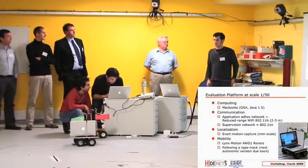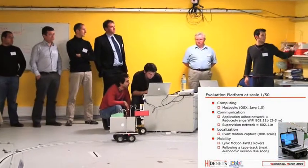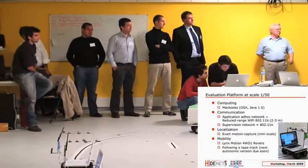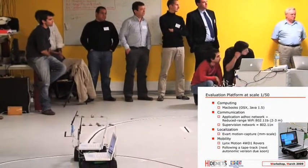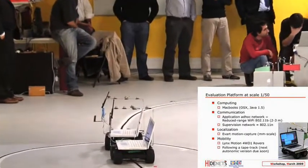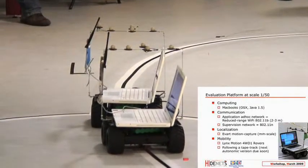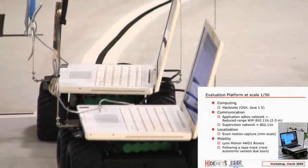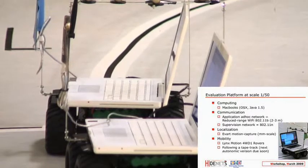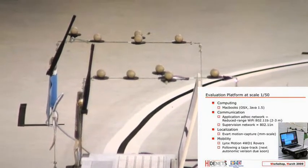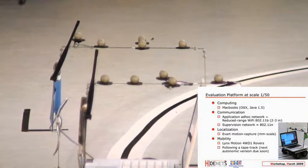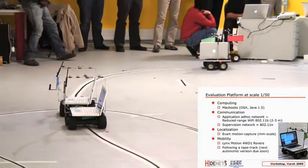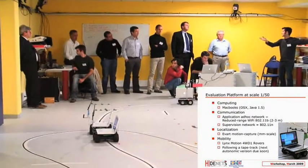The platform is a 1:50 scale reduction compared to a real car, running on MacBooks with two different networks. The application ad hoc network runs on reduced-range Wi-Fi 802.11b on external interfaces with an external antenna. Between the interface and the antenna there are signal attenuators, so the actual range is between two and three meters. There's also a supervision network used to display the application interface on screen and to connect to the localization server.